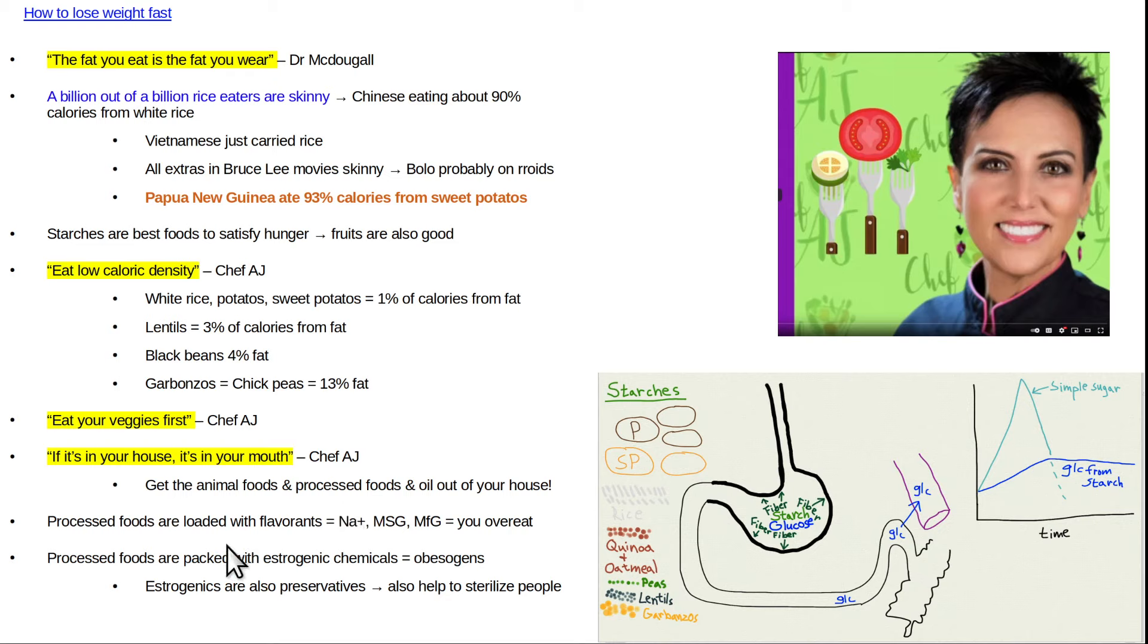Processed foods are loaded with flavorants, things like sodium, MSG, MFG, and you'll have a tendency to overeat with those types of foods. When they feed animals foods with MSG, MFG to get the animal to overeat, to make them fat. Like in a research study, if you want to make the lab animals fat, to cause atherosclerosis in research study, they feed the animals eggs.